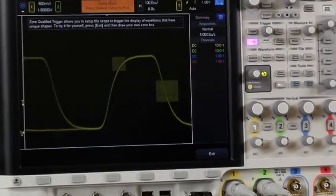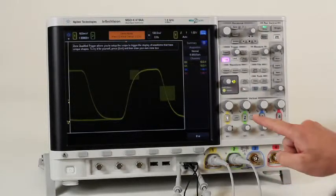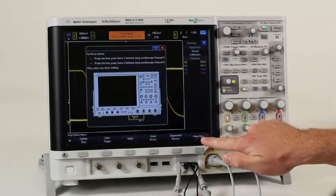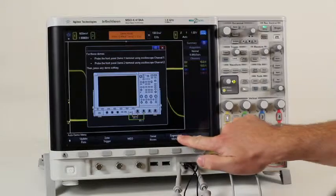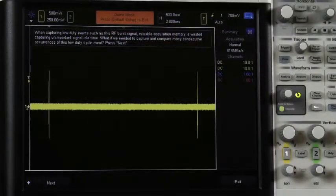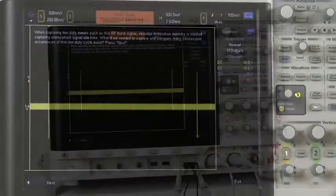But what about bursting or packetized signals that occur over relatively long periods of time? Doesn't an oscilloscope need ultra deep memory to capture everything of interest? Actually, Agilent has something better for customers needing such insight called segmented memory. Here we see short packets of RF bursting signals with very long periods of inactivity that a customer doesn't care about. We can use segmented memory to capture only the signal of interest and ignore the periods of inactivity.